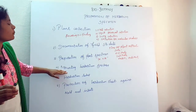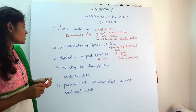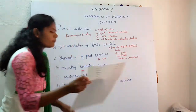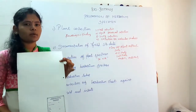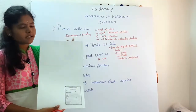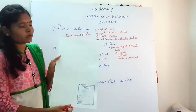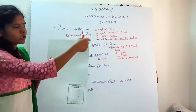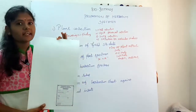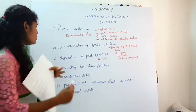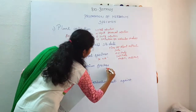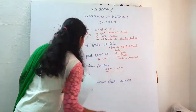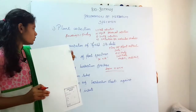Fourth, mounting the herbarium specimen. Once the specimen is dry, you stick it onto the herbarium sheet. The standard herbarium sheet size is 29 cm x 41 cm. This size is standardized worldwide. You add the dried plant onto the herbarium sheet of this size.